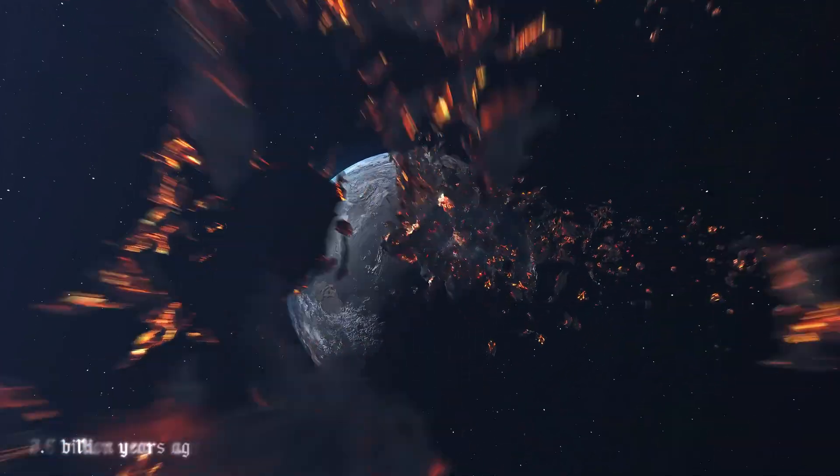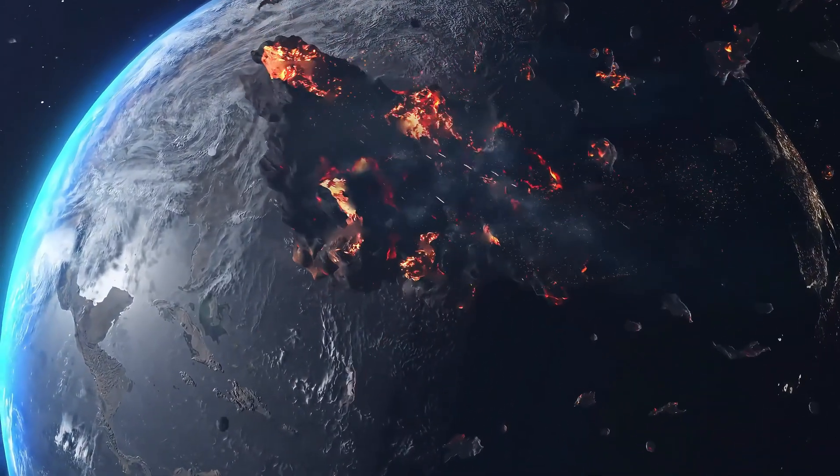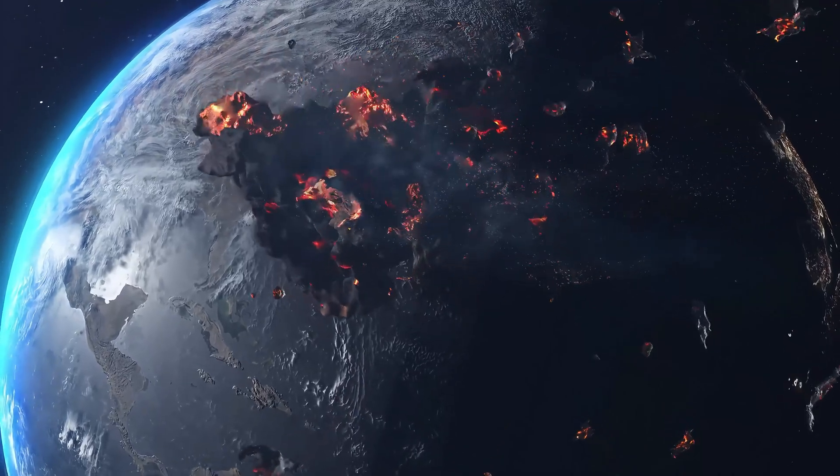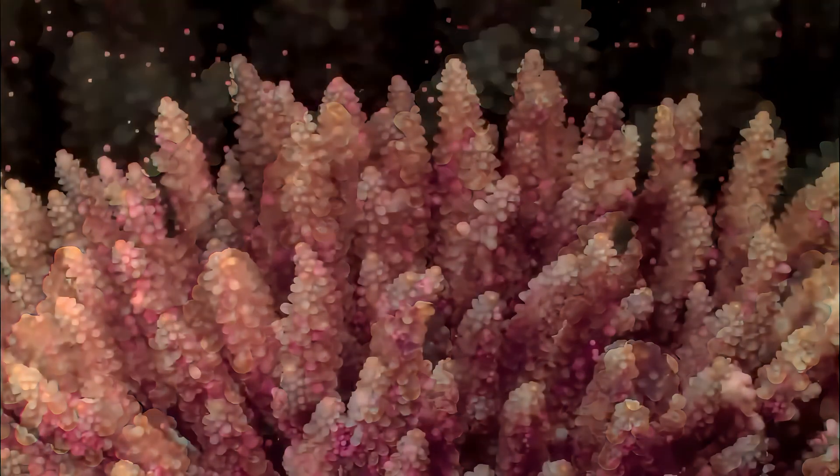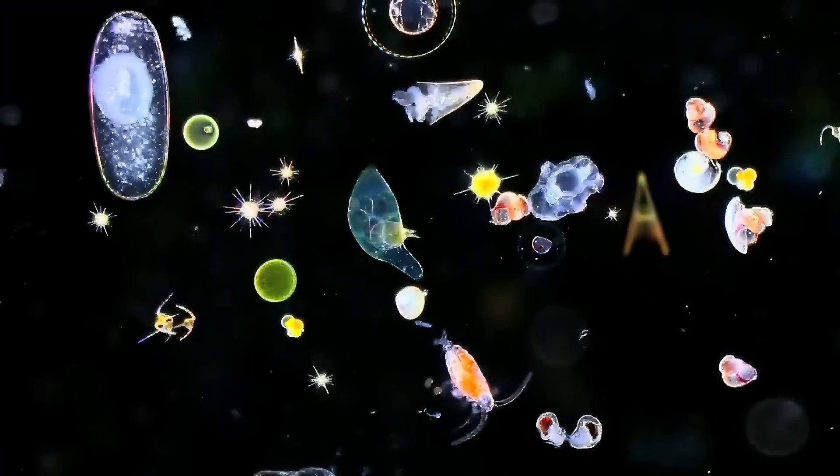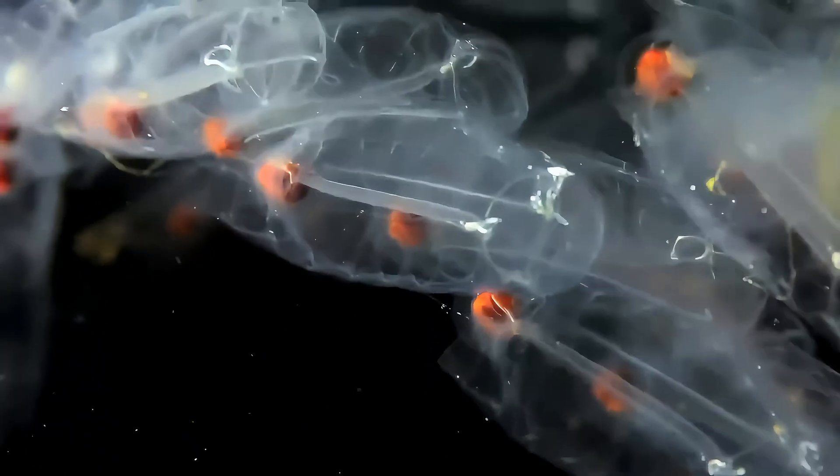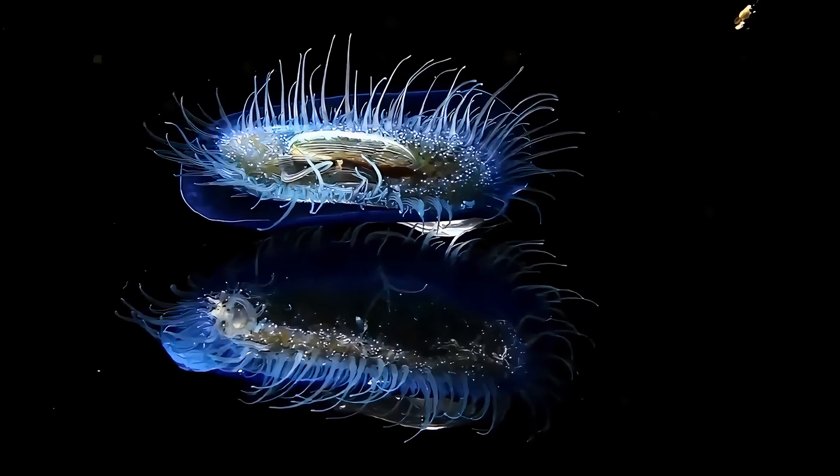Once Earth had cooled and its surface solidified, a series of extraordinary events set the stage for the beginning of life. Around 3.5 billion years ago, in the ancient oceans of our planet, the first primitive life forms emerged: single-celled organisms. These simple, microscopic beings would eventually give rise to all forms of life on Earth. Over billions of years, these organisms evolved and diversified, adapting to their environment.